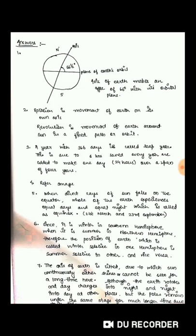Our next question was, define rotation and revolution. Rotation is the movement of earth on its own axis. Revolution is the movement of earth around sun in a fixed path or orbit. Due to rotation, we have day and night. Due to revolution, we have change in seasons.